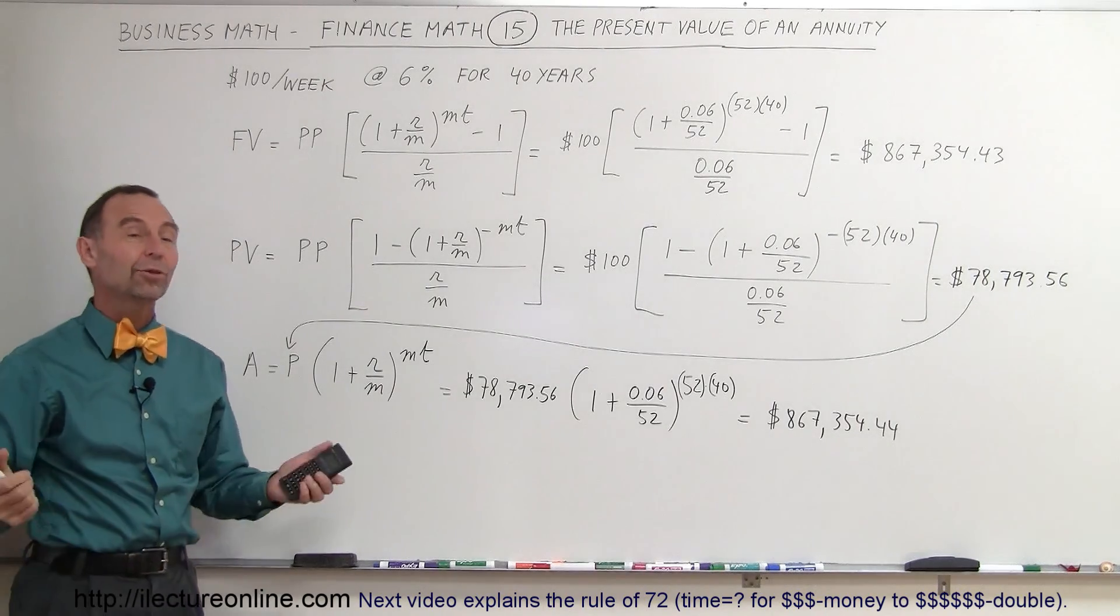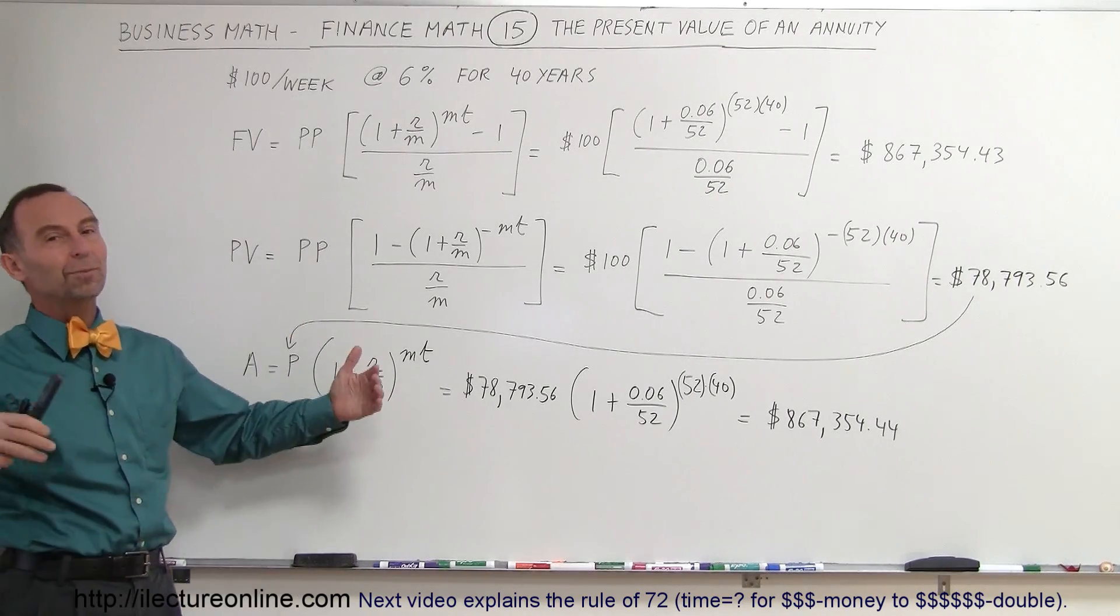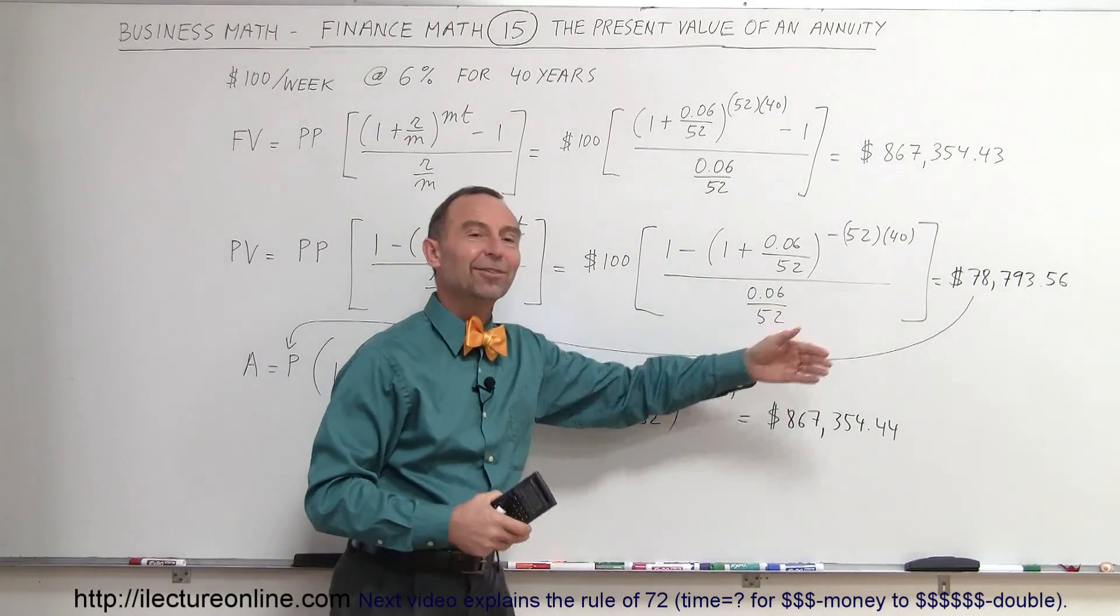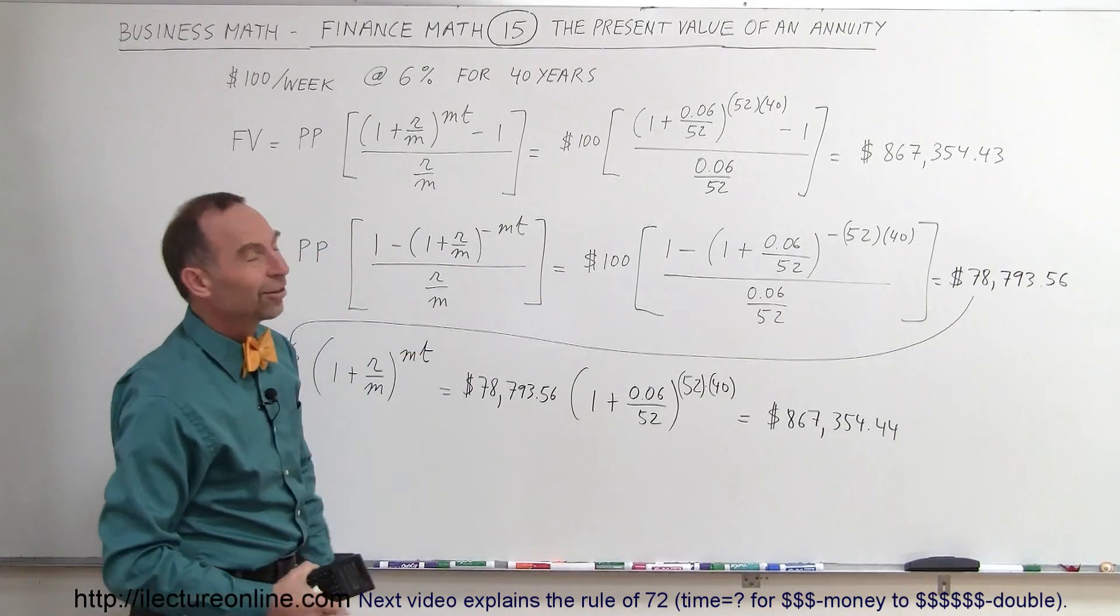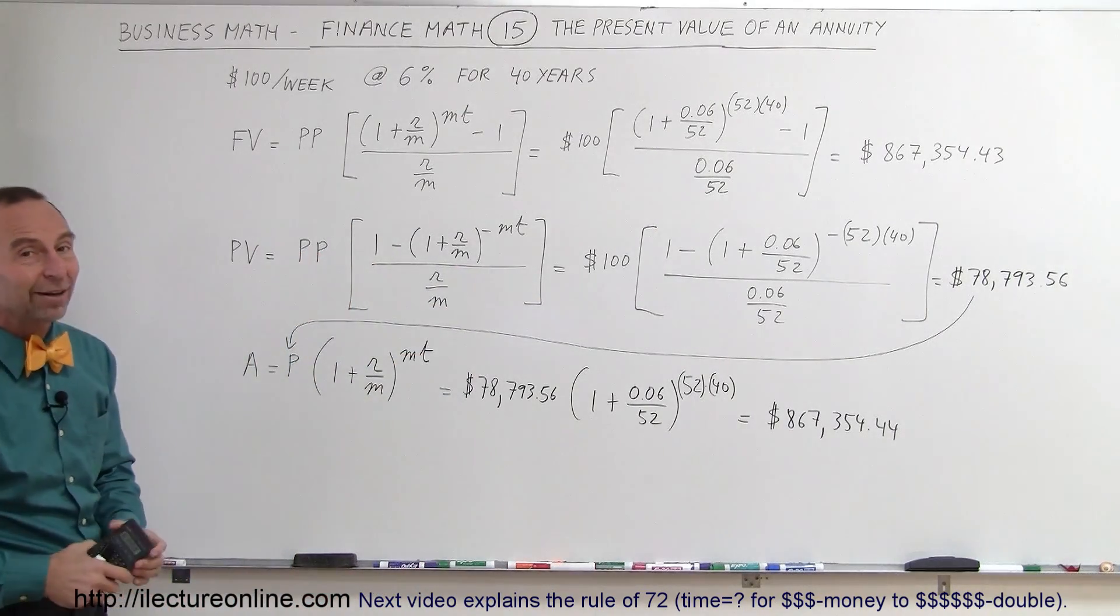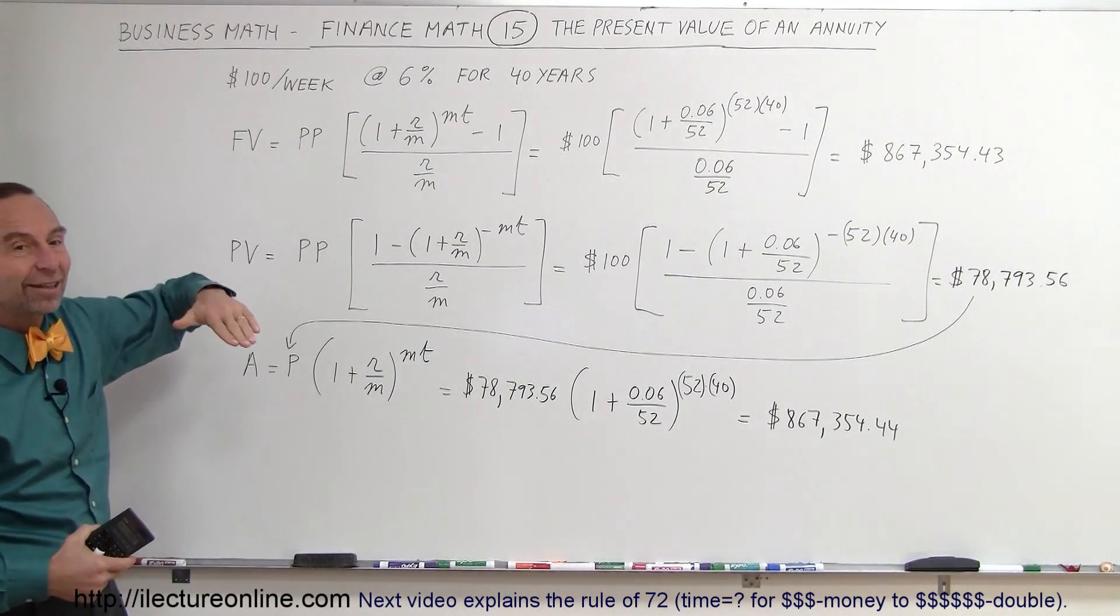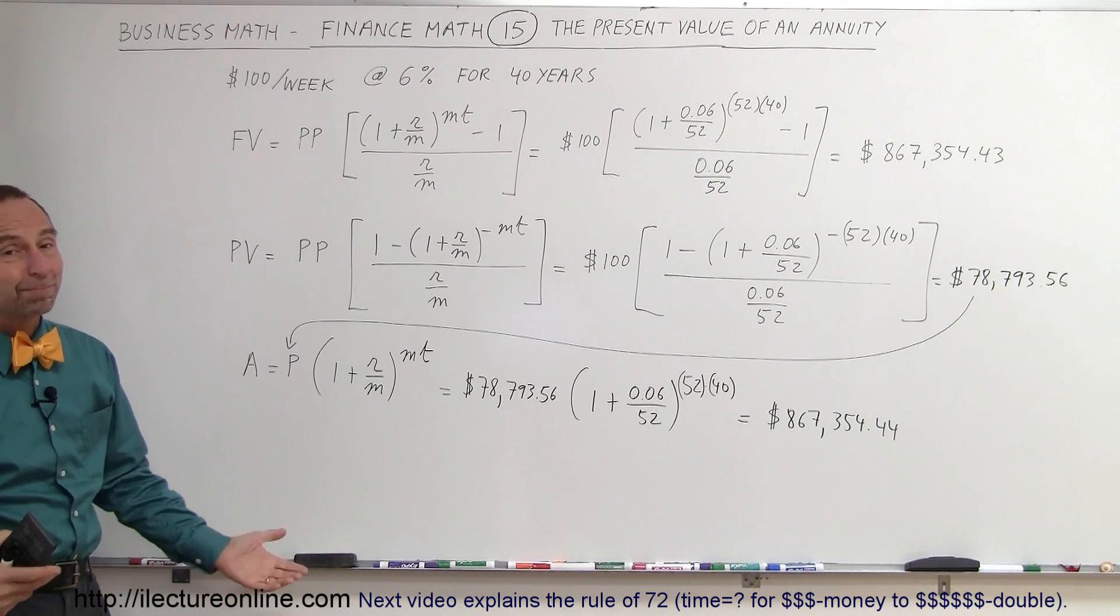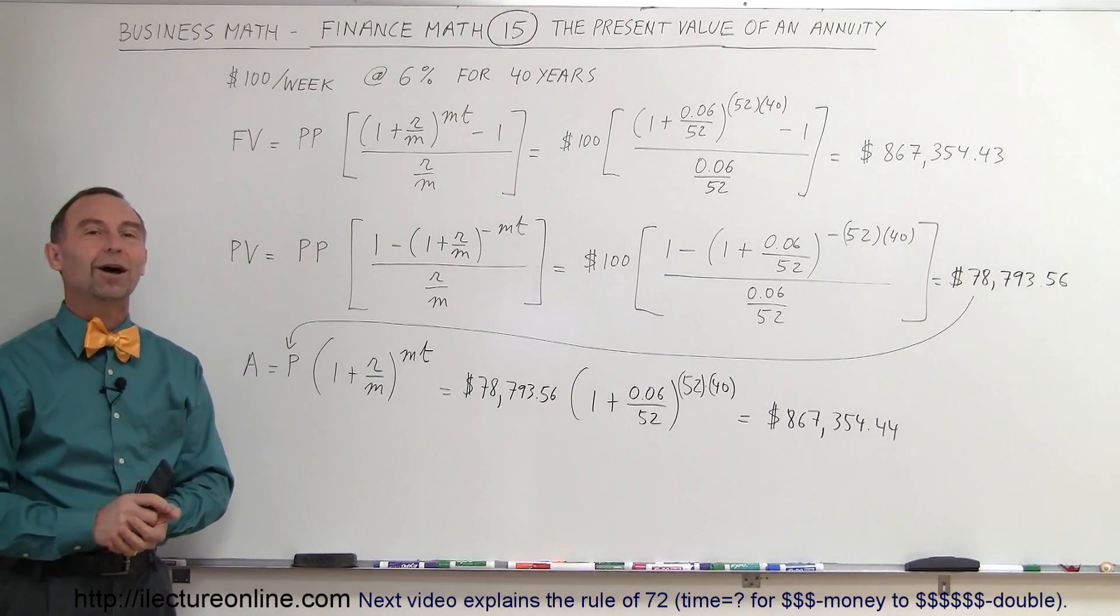Now, why don't we just go ahead and take the $79,000 and put it in a bank today? Because most people when they get out of college and they start working, they don't have $79,000 to put into a bank so that it will accumulate to $867,000 by the time they retire. So the only other option then would be to start by pulling out $100 a week out of your paycheck and do that for 40 years, and you'll end up with that amount you can retire on. And that's how that works. That is what we mean by the present value of an annuity.